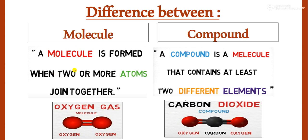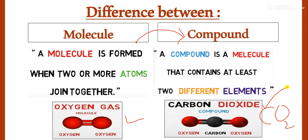A molecule is formed when two or more atoms join together. For example, an oxygen molecule is formed from two oxygen atoms. A compound, on the other hand, is a molecule that contains at least two different elements. In carbon dioxide, CO2, there is both a carbon element and an oxygen element, which is why it is a compound.